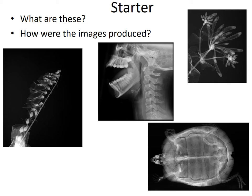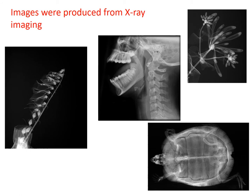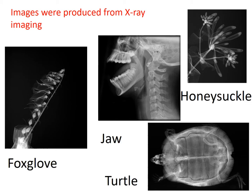Here we've got a foxglove, a human head with the jaw and teeth, what I think is honeysuckle, and a turtle. These are X-ray images. X-rays are passed through the objects; some are absorbed and some pass straight through. Where X-rays pass through, the film goes dark, and where they are absorbed, we get white areas - allowing us to see inside all these different items.